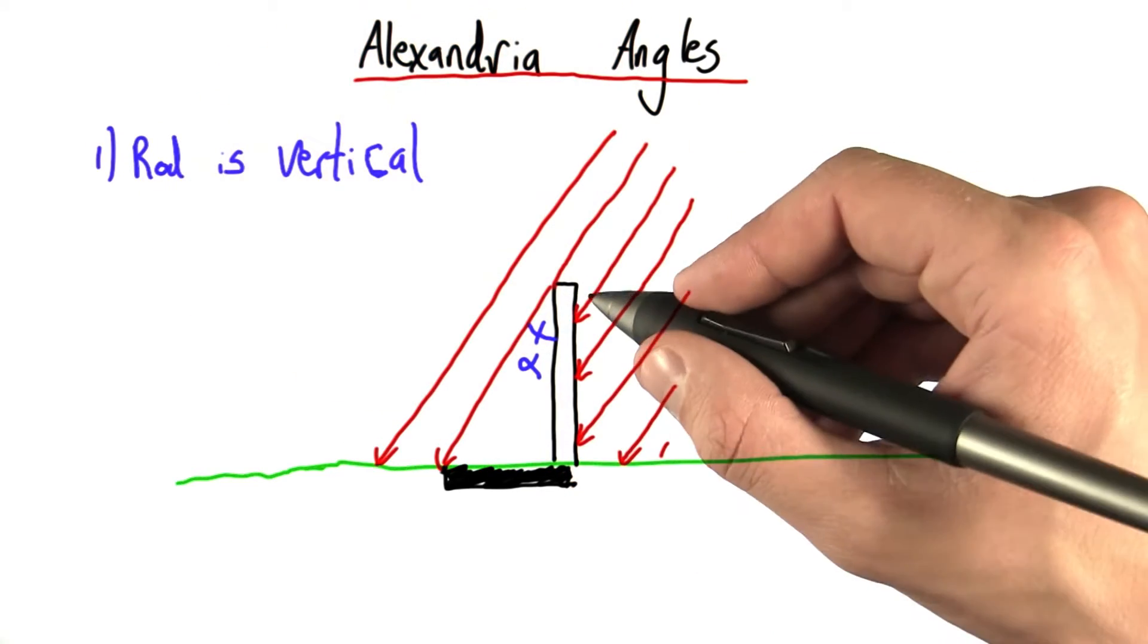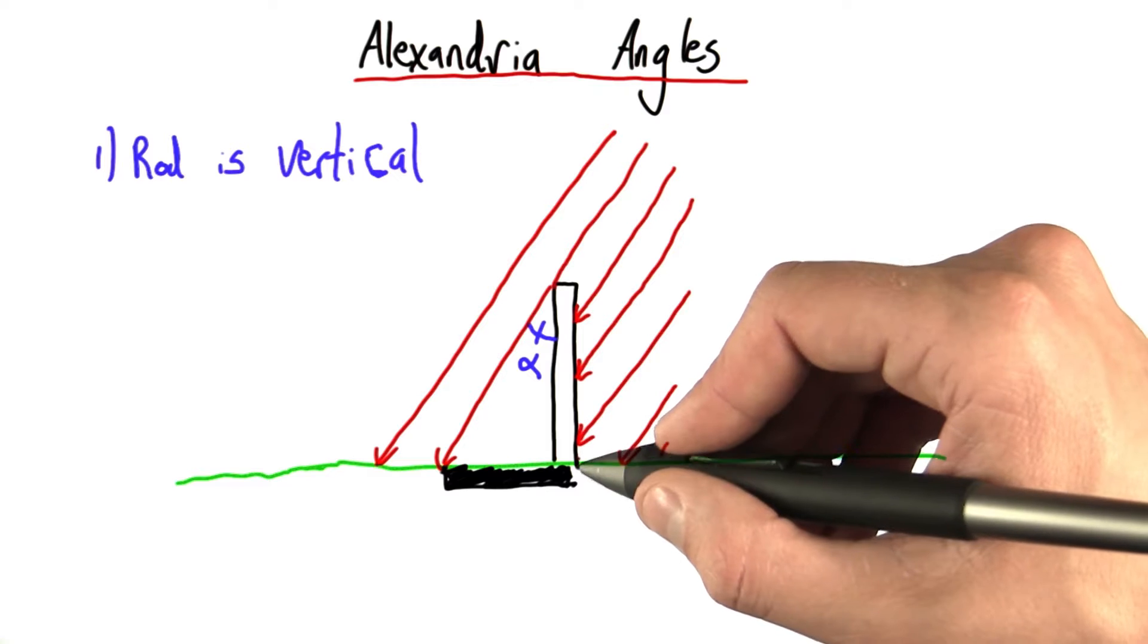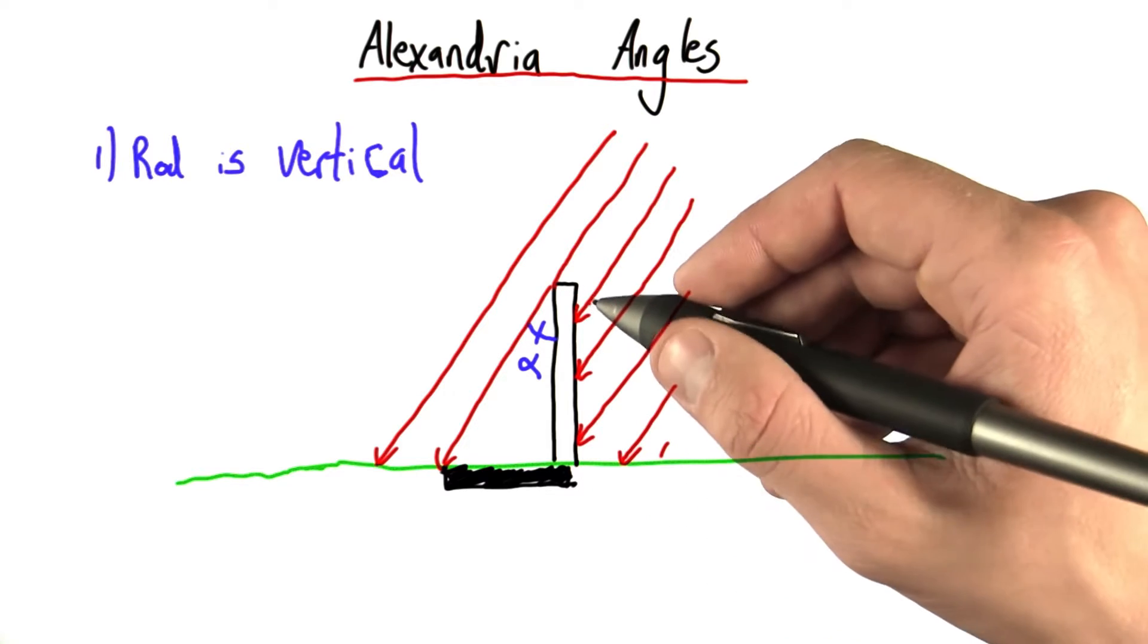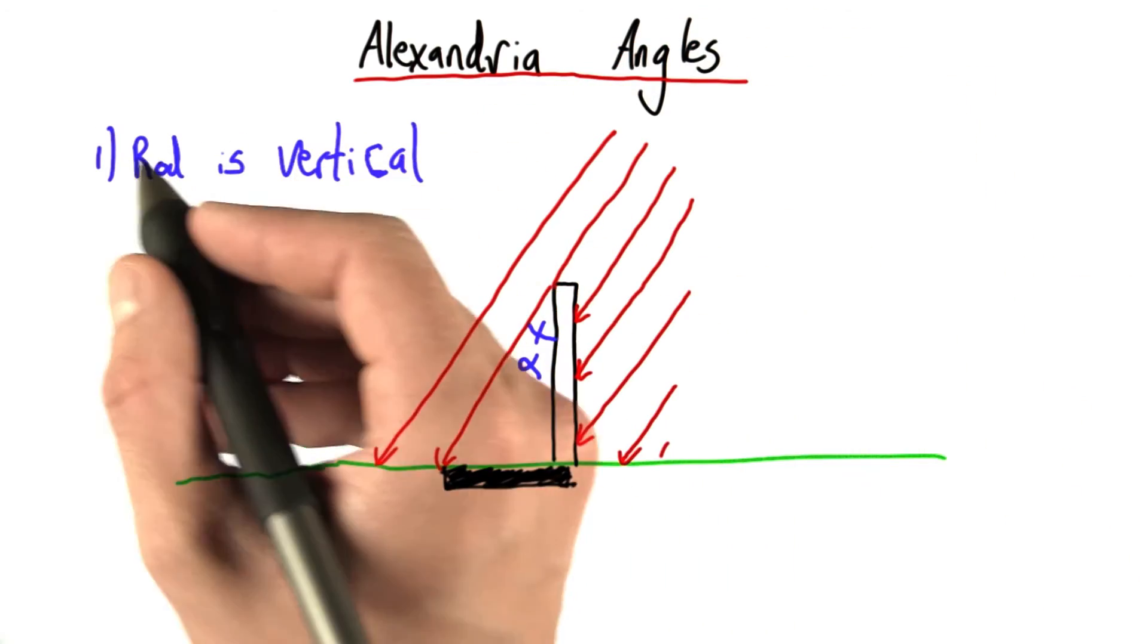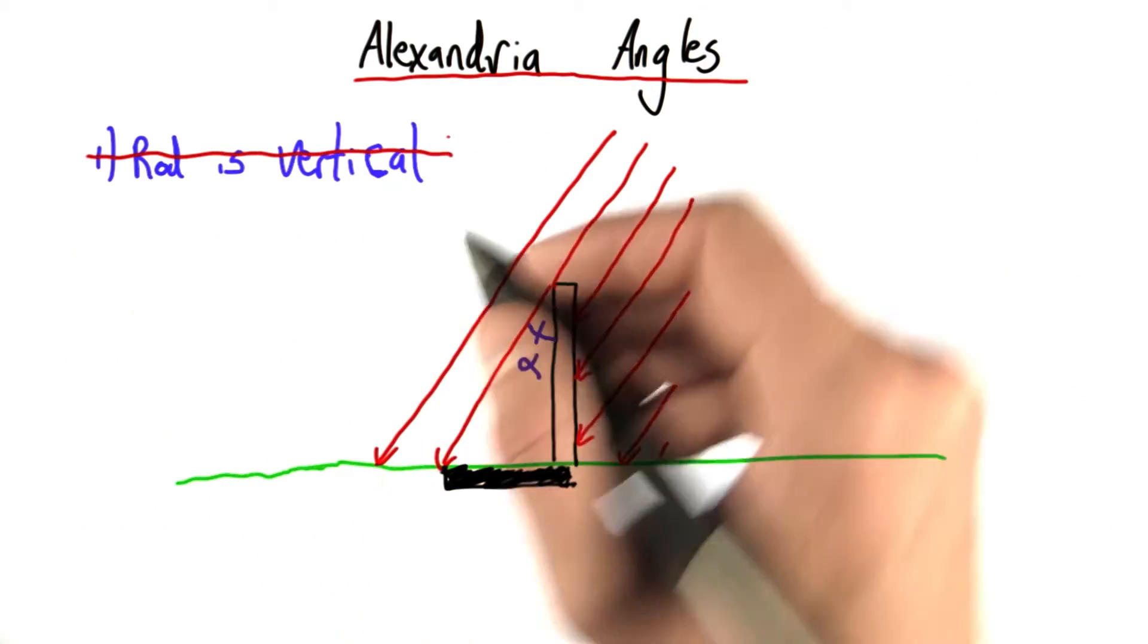By simply hanging a weight from a string, you can assure that something is vertical because you know that weight will always point straight down, straight to the center of the earth. So, this wasn't really something to worry about.